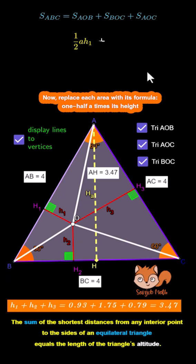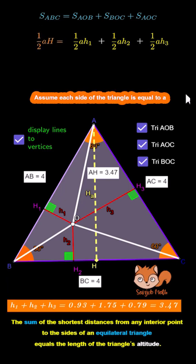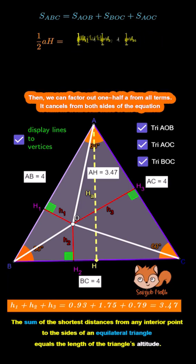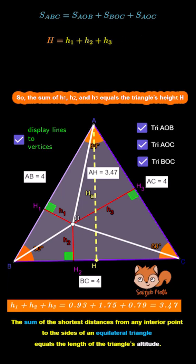Now, for each of the smaller triangles, we use the area formula: one half multiplied by the base times the height. If we assume that each side of the triangle is equal to A, then we can factor out one half times A from all three terms. This common factor appears on both sides of the equation, so it can be cancelled.